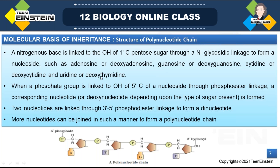Thymidine appears in DNA, while in RNA it is replaced by uridine with uracil. When a phosphate group is linked to the OH of the 5' carbon of a nucleoside through a phosphoester linkage, a corresponding nucleotide or deoxynucleotide is formed, depending on the type of sugar present.